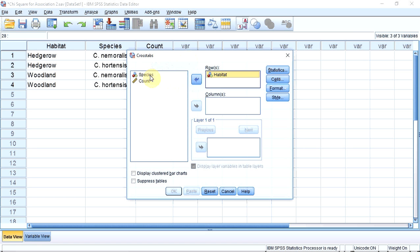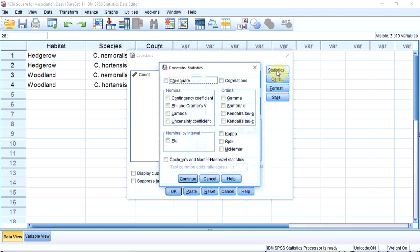For the columns, I want to select the species variable and place that into the columns box. I am now going to go up to the Statistics button and tell it which test I want it to use. A sub-window opens, and I am going to click the chi-squared tick box and down to Continue.